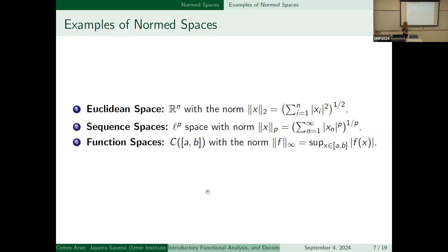And there are some nice examples here to understand what are normed spaces. First one is Euclidean space, and this is R^n with norm, norm of x sub 2, is equal to that. And sequence spaces is an example of normed space, and is the ℓ^p space with norm, norm of x sub p, it's equal to that. And the function spaces is C[a,b] with norm, norm of x sub infinity is equal to that. These are just examples of these spaces.